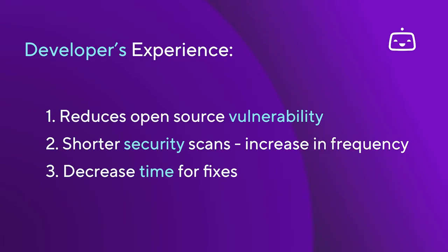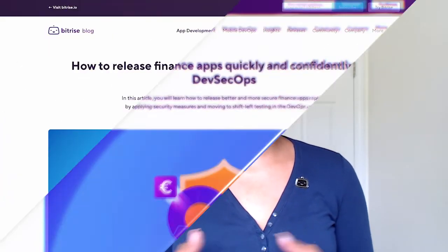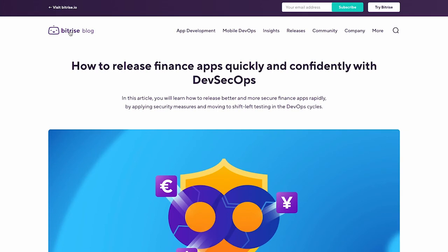After adopting an automated DevSecOps process, developers will experience a reduction in open source vulnerabilities, spend less time waiting for security scans — which means they can be done more often — and see a decrease in the time it takes to identify vulnerabilities, which in turn reduces the time their app is exposed. Implementing these scans with an existing CI/CD platform, such as Bitrise, provides better security without much added work. Bitrise provides integrations with multiple security tests, which can be found listed in our blog post: How to release finance apps quickly and confidently with DevSecOps.